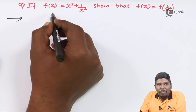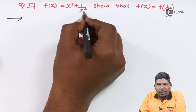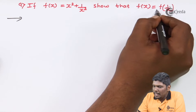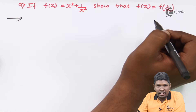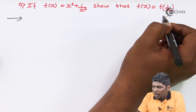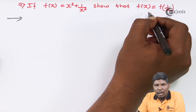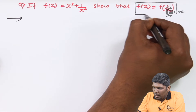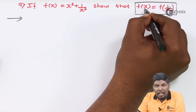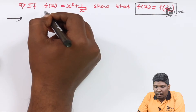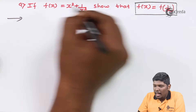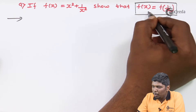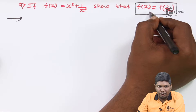If f(x) equals x squared plus 1 upon x squared, show that f(x) equals f(1/x). Now in this sum, we are going to prove this relation. The LHS will consist of f(x), which is already given, and f(1/x) we have to find first, and then check whether it is equal to f(x) or not.